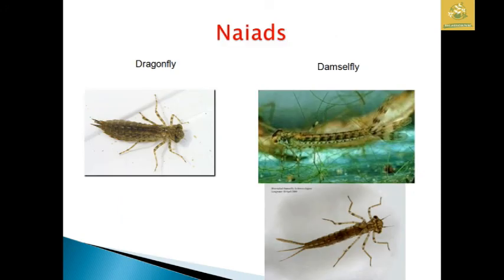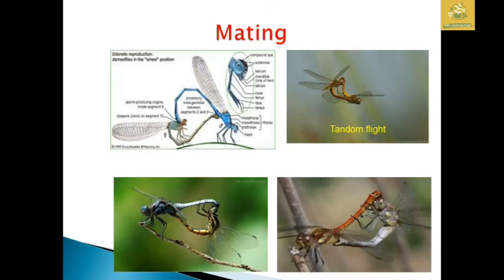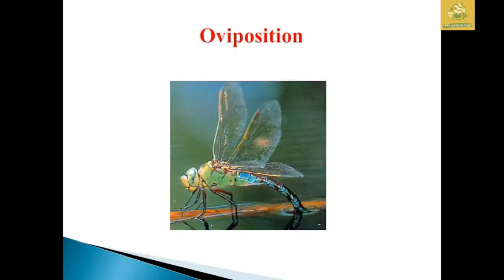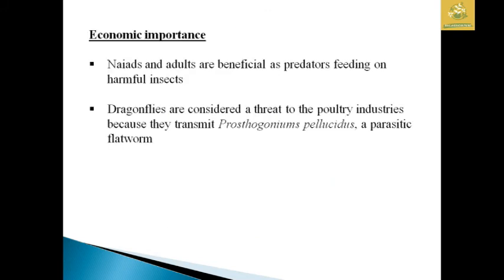These are the naiads of dragonfly and damselfly. You can see the mating position and tandem flight, and how oviposition takes place. The economic importance: naiads and adults are beneficial as predators eating harmful insects. However, dragonflies are considered a threat to poultry industries because they transmit Prosthogonimus pediculus, which is a parasitic platyhelminth.